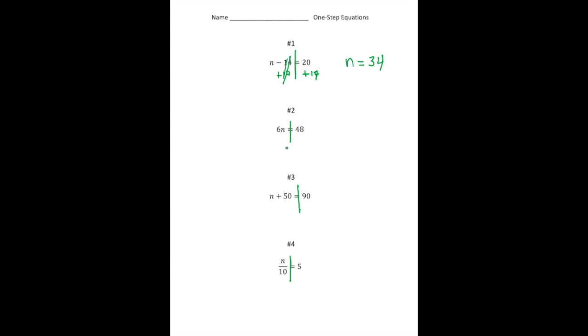Number 2. We have 6 times n equals 48. So the opposite of times n is dividing. So we're going to divide by 6. And divide by 6. Again, the whole point of that is to get this n by itself. And when we divide, 6 divided by 6 is just 1. Right? And 48 divided by 6 is 8. So n equals 8.